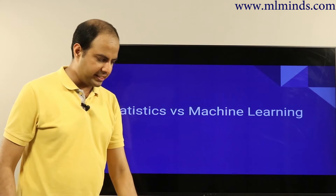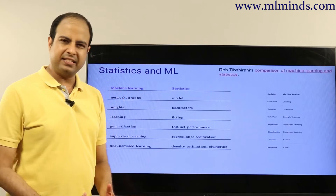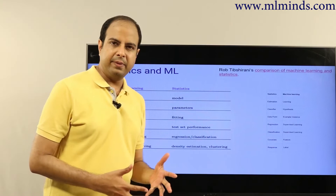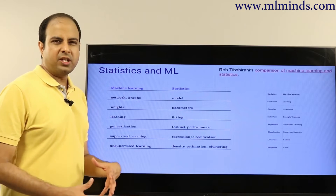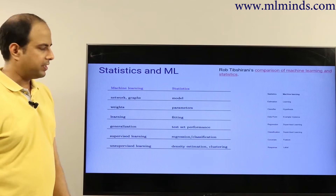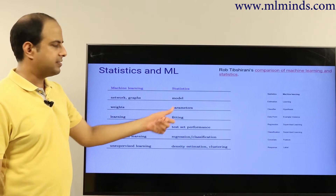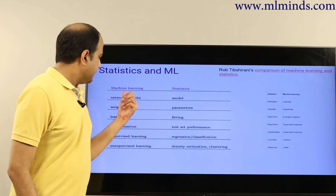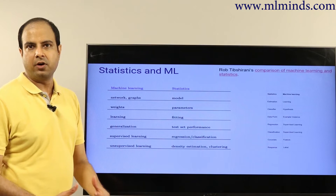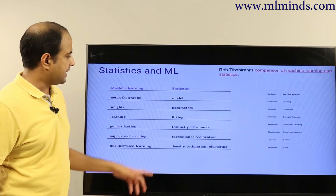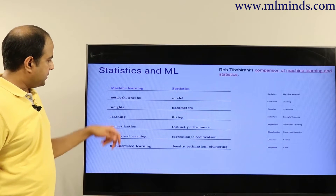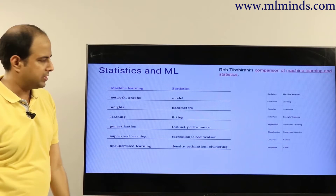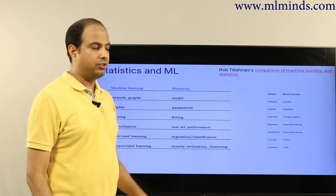In this video I'll talk about statistics versus machine learning. Some people have confusion about what is statistics, what is machine learning, what are the differences or similarities between these two things. Statistics and ML are quite related in some senses — they share common concepts, but the terminology differs. For example, in statistics people call something a 'model' while in machine learning you might call them 'networks' or 'graphs.' In ML you call something 'weights,' while statistics people call them 'parameters.' A machine learning guy would say 'I'm learning a model'; a statistics guy would say 'fitting a model to this data.' A machine learning guy would say 'the model should generalize well'; a statistics guy would say 'it should have good test set performance.' In machine learning you say 'supervised learning,' while in statistics you say 'regression' or 'classification.' In ML you say 'unsupervised learning,' while in statistics you say 'density estimation' or 'clustering.'